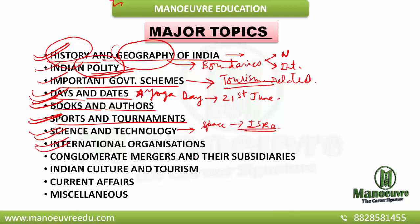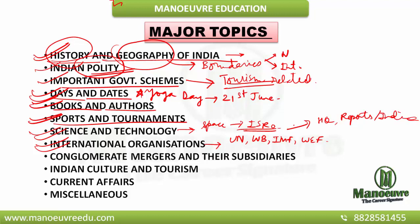Next comes international organizations — I mean the United Nations, World Bank, International Monetary Fund, World Economic Forum, etc. You need to be aware of the headquarters of these international bodies, the reports or indexes that they publish, and the sub-bodies of the United Nations as well. These are the things you need to keep in mind when it comes to international organizations.